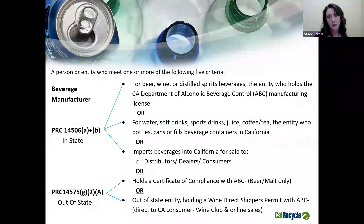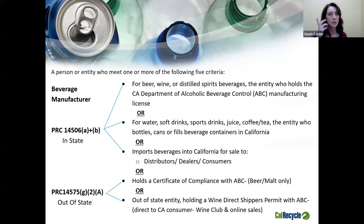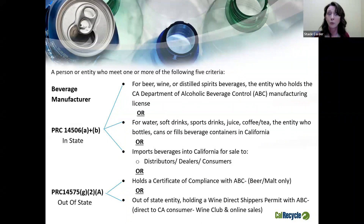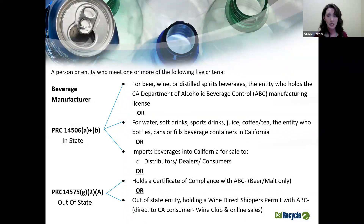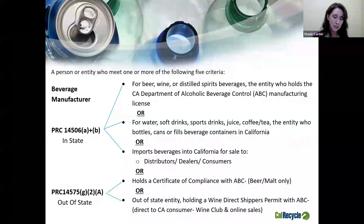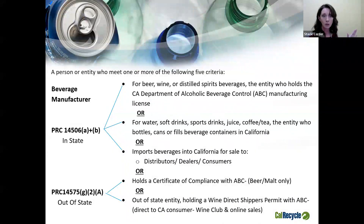For the purpose of paying processing fees and ensuring CRV labeling compliance, the beverage manufacturer is a person or entity who meets one or more of five criteria. For beer, wine, or distilled spirit beverages produced in California, the beverage manufacturer is the entity who holds the California Department of Alcoholic Beverage Control Manufacturing License. If you are licensed through ABC to produce wine, spirits, or beer in California, you are the beverage manufacturer — it doesn't matter if you bottle it yourself, use a mobile bottler, or send it to a contract bottler. If the product is produced under your manufacturing license, you are the beverage manufacturer.